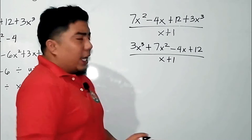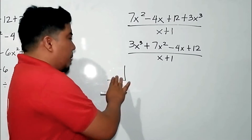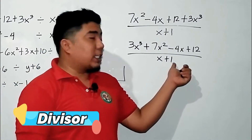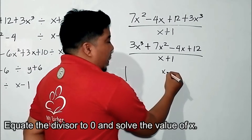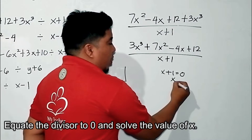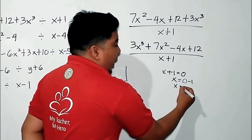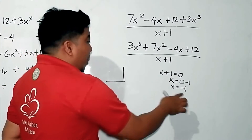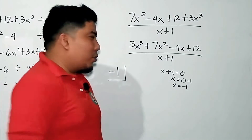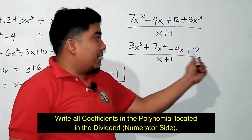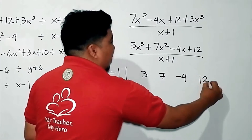This is very crucial. In synthetic division, you make a small box in which you place the divisor. We have x + 1. To find the value to use, you equate x + 1 to 0, and using transposition, you transpose plus 1 to the other side: 0 minus 1, so x equals negative 1. Therefore, negative 1 will be the divisor for your coefficients. Next, write all the coefficients of the polynomial: 3, 7, negative 4, and positive 12. Then you make a long line.